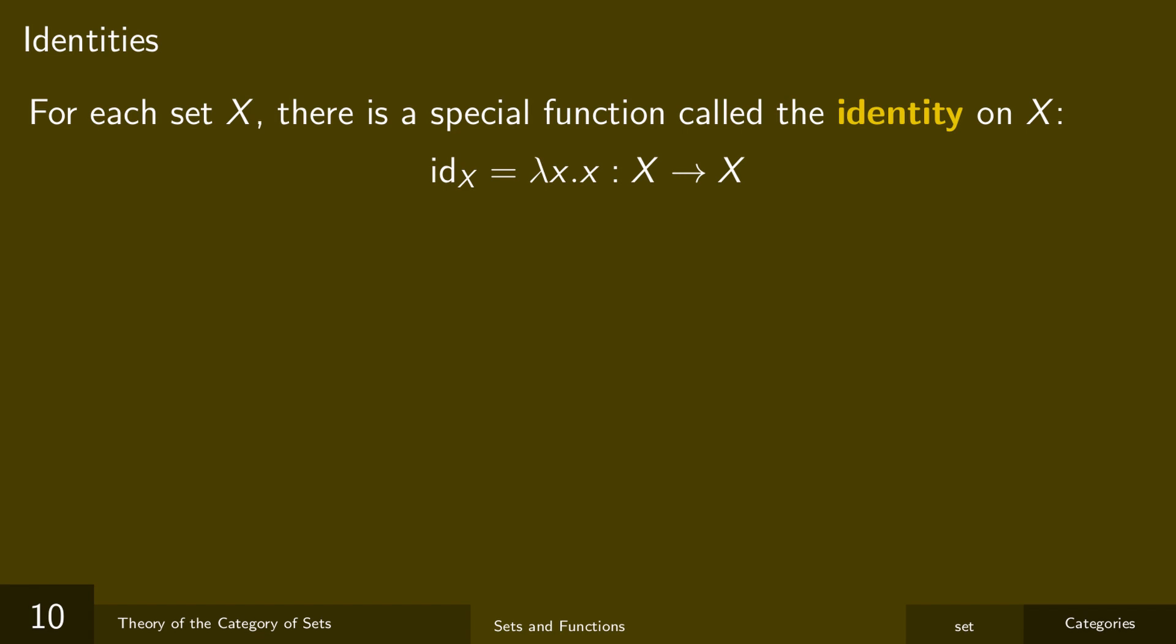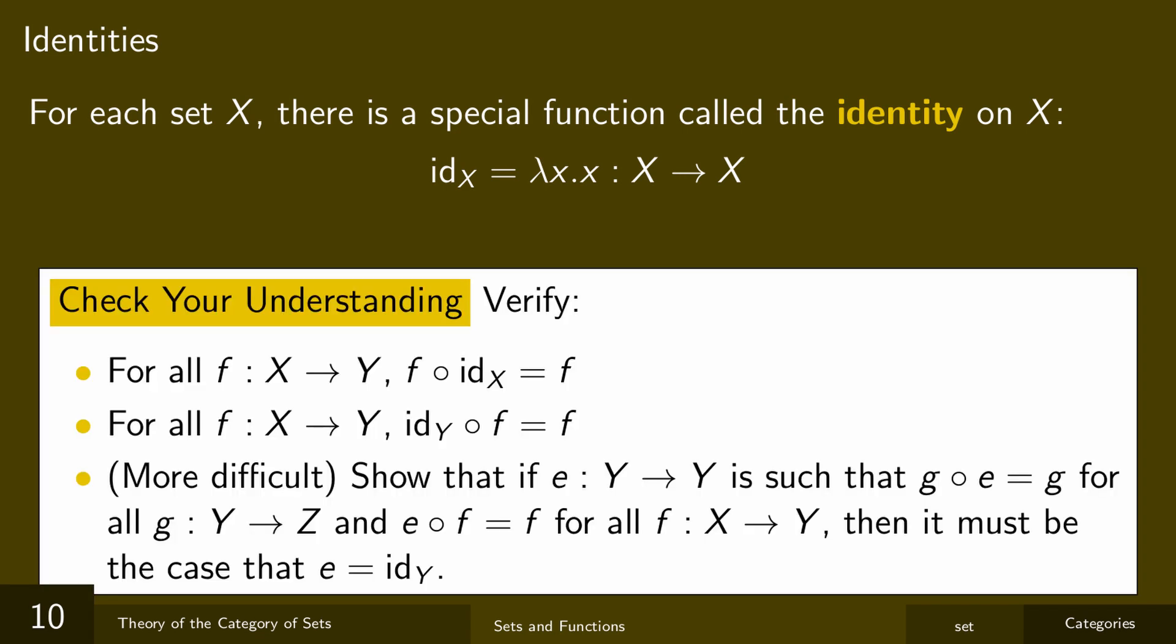And so we're going to see all the things we can do just using identities and composition. So here's some facts you can prove about how identity and composition work together. Notice that all of these ask you to prove equalities between functions, so you're going to need the principle of function extensionality in order to do that.